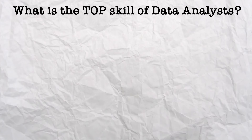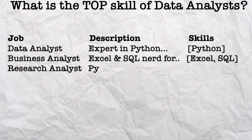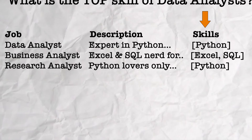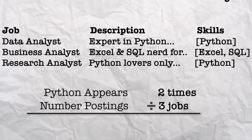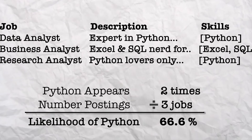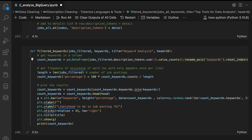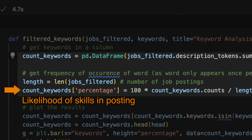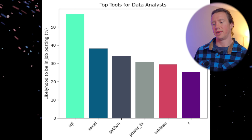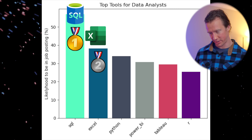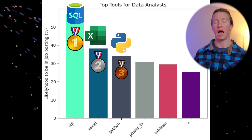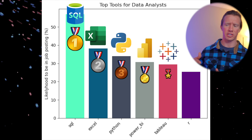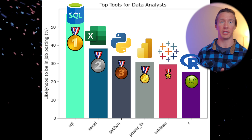Let's dive into the final analytical question: what is the top skill for data analysts? We need a metric — we can evaluate the likelihood of a skill appearing in a job posting. If Python is in two of three job postings, its likelihood is 66%. Python calculates a percentage for each keyword to determine likelihood of appearing in a job posting. And the results are: SQL first, then Excel, and finally Python. I'm not really surprised — these are very similar to what I found last year scraping LinkedIn job data.